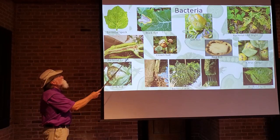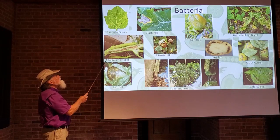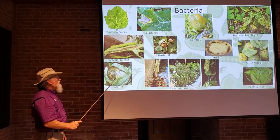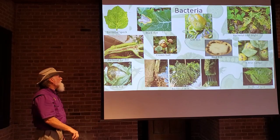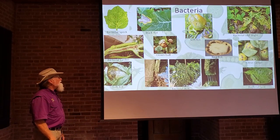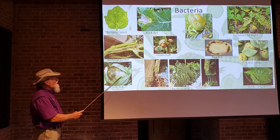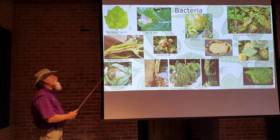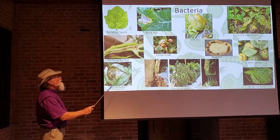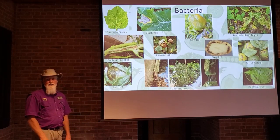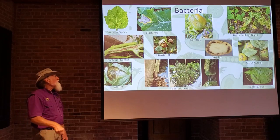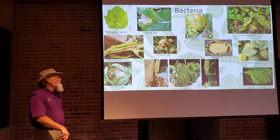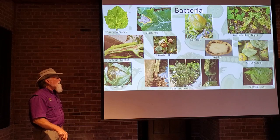Bacterial canker: this is a canker symptom inside the stem of a tomato plant — you can see all the dead tissue caused by the bacteria. Soft rot: lettuce infected with the bacterium causing soft rot — with lettuce and cabbage, the outer leaves often look fairly healthy, but when you open it up inside you have all the slimy, foul-smelling rot occurring, because within those outer leaves the humidity is high and the bacterium thrives.